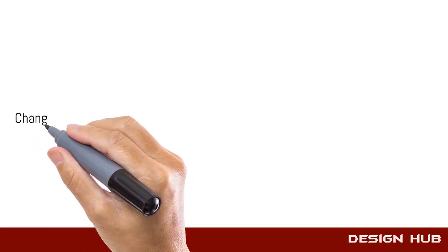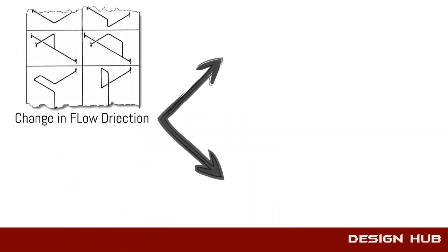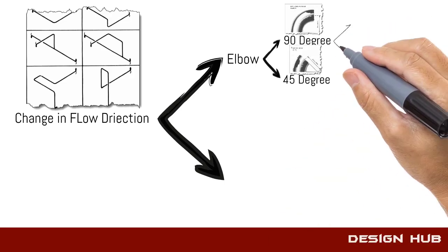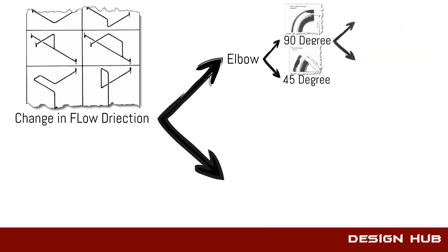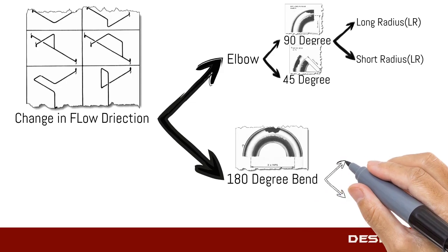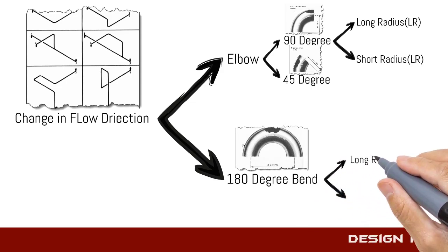This video provides full information about elbows and their types. Elbows are basically two types: 90 degree and 45 degree elbow. Again, 90 degree elbows are divided into two types: long radius elbow and short radius elbow. Similarly, 180 degree bends are also classified into long and short radius types.